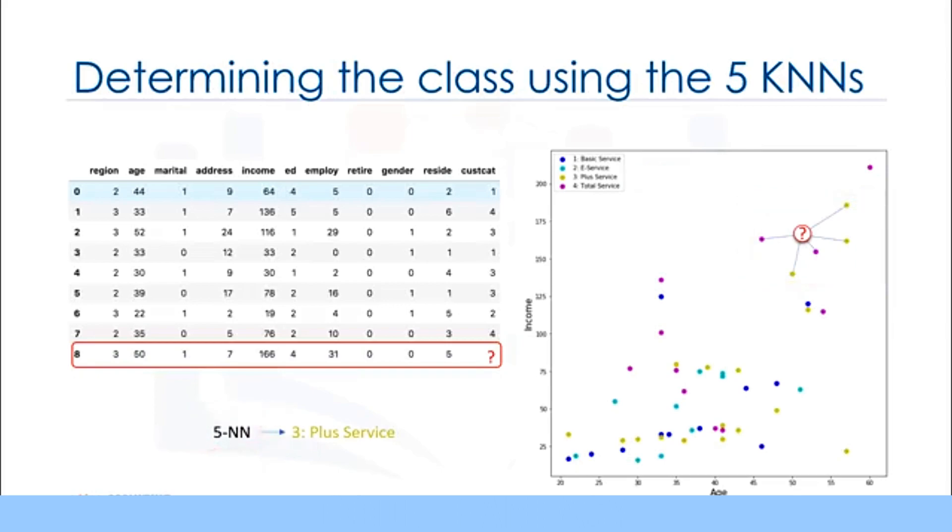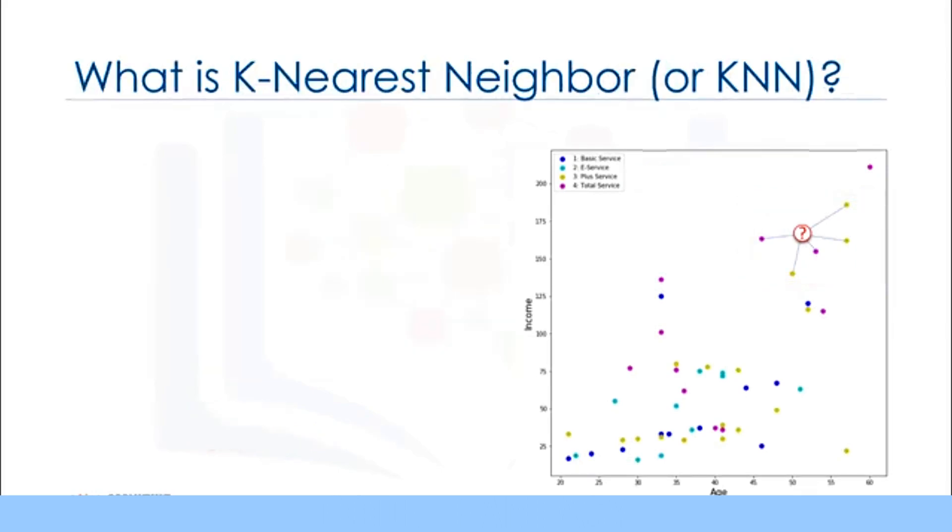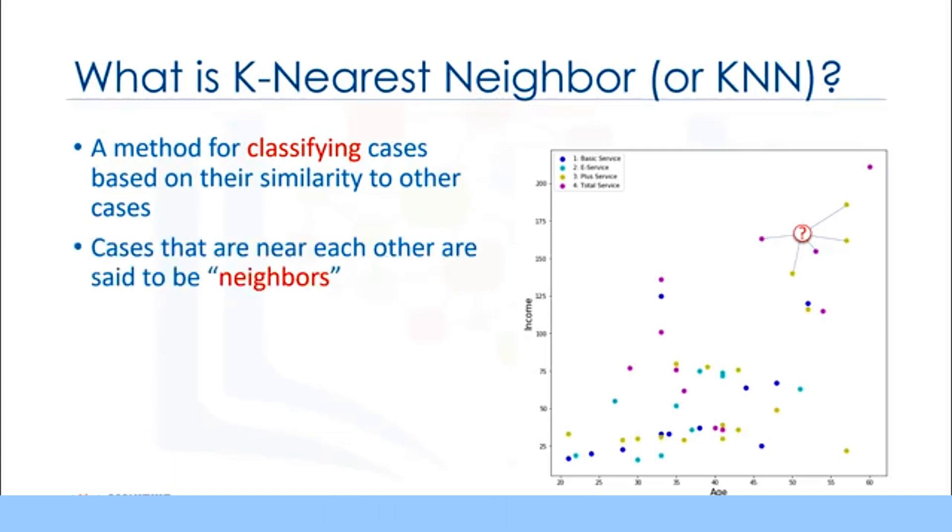Now, let's define the k nearest neighbors. The k nearest neighbor's algorithm is a classification algorithm that takes a bunch of labeled points and uses them to learn how to label other points. This algorithm classifies cases based on their similarity to other cases. In k nearest neighbors, data points that are near each other are said to be neighbors.